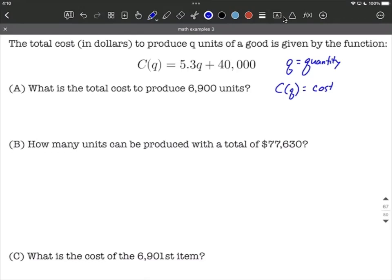In part A, what we're going to do is figure out what is the total cost of producing 6,900 units. So 6,900, that's a value for Q, and we want to find the cost. What we'll do is plug 6,900 in for each of our Qs in the function. The cost for 6,900 units is 5.3 multiplied by 6,900 plus 40,000. I got this to be 76,570, and when we think about what our units are, C of Q was the cost in dollars.